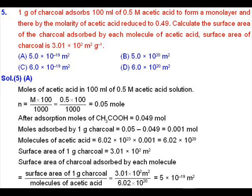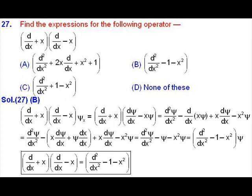The surface area of charcoal absorbed by a single molecule will be given as the surface area of one gram of charcoal divided by the total number of molecules of acetic acid adsorbed. That will come out to be 3.01 × 10² divided by 6.02 × 10²⁰, so the final answer will be 5 × 10⁻¹⁹ m², and option A will be the correct one.